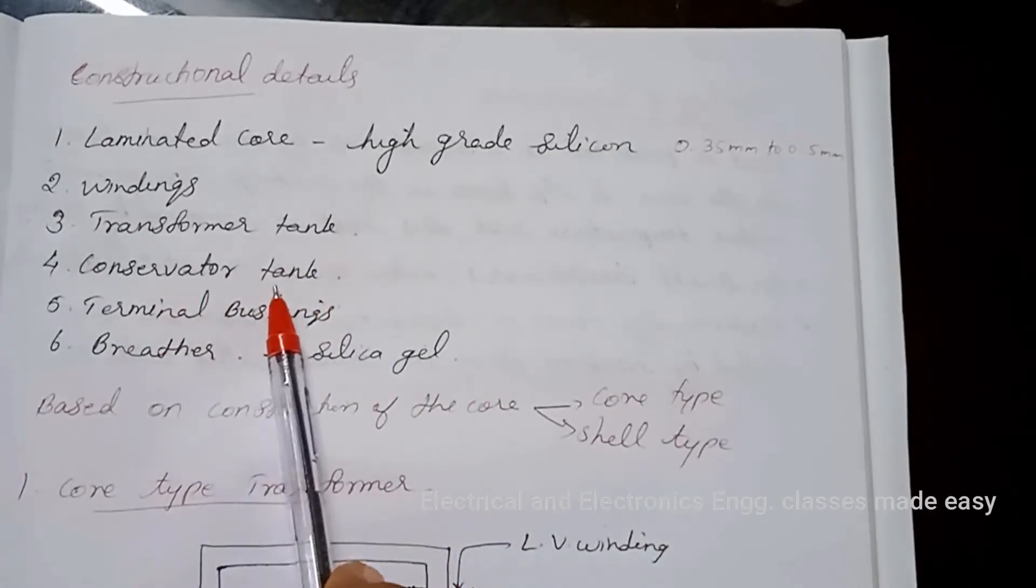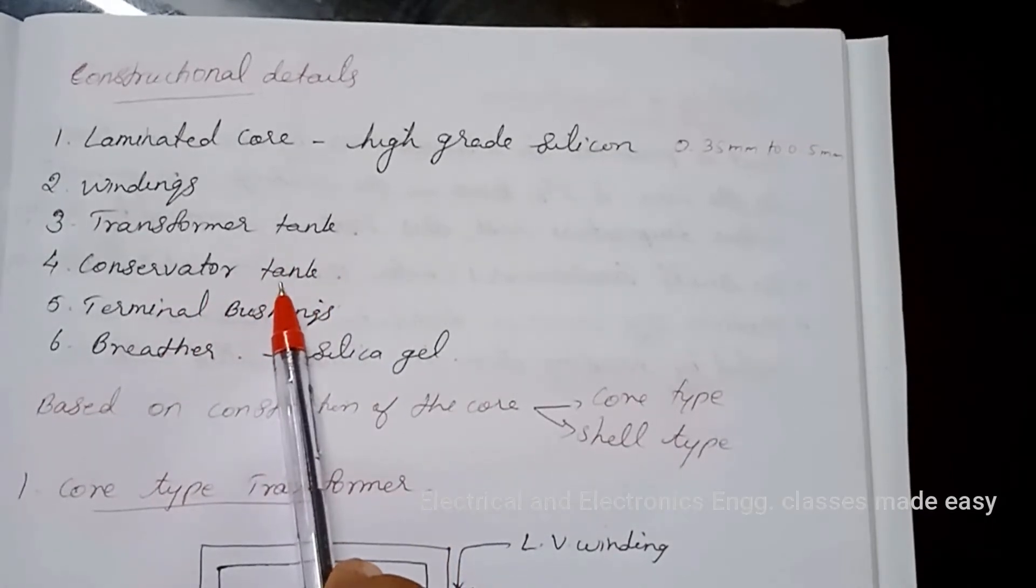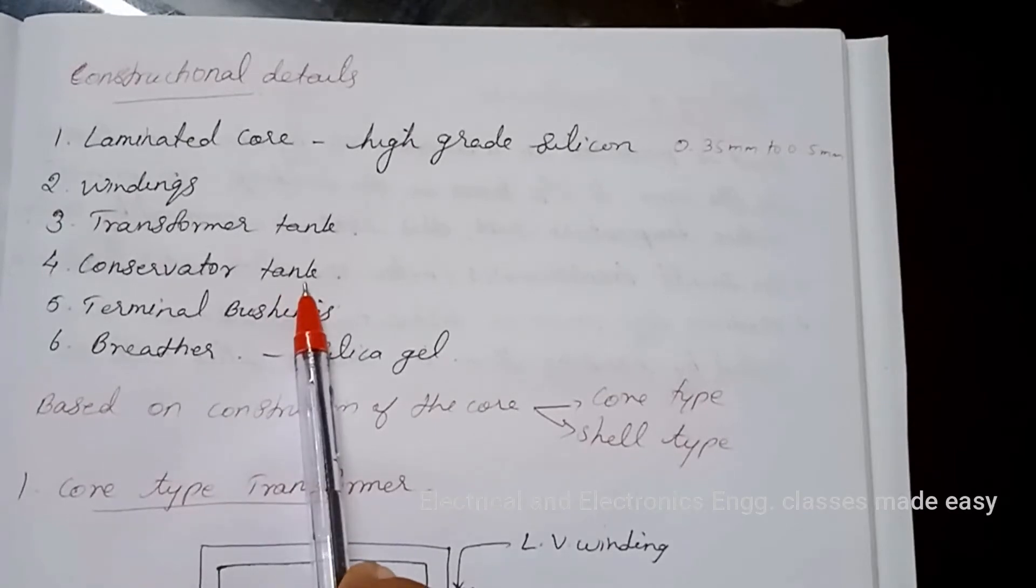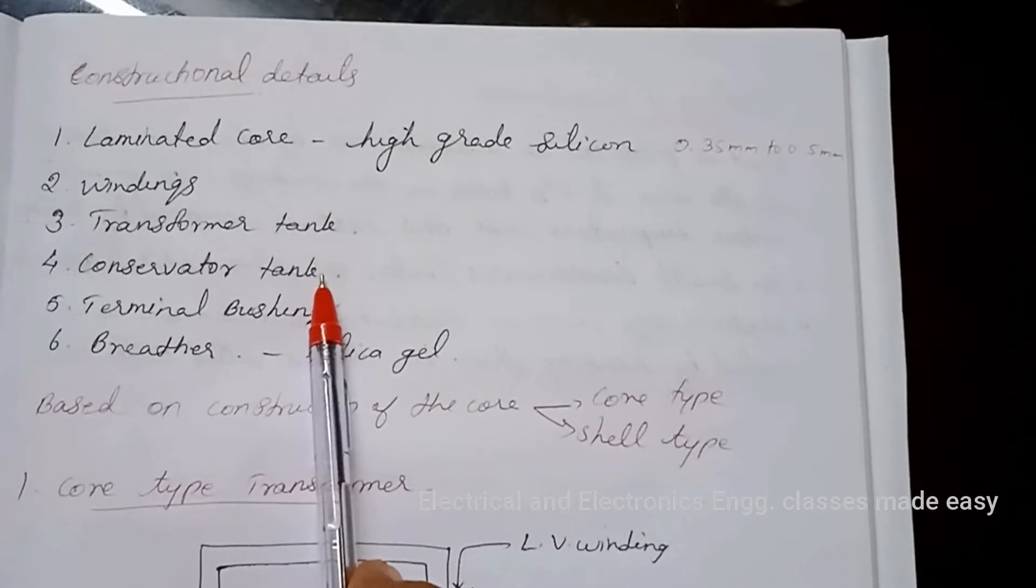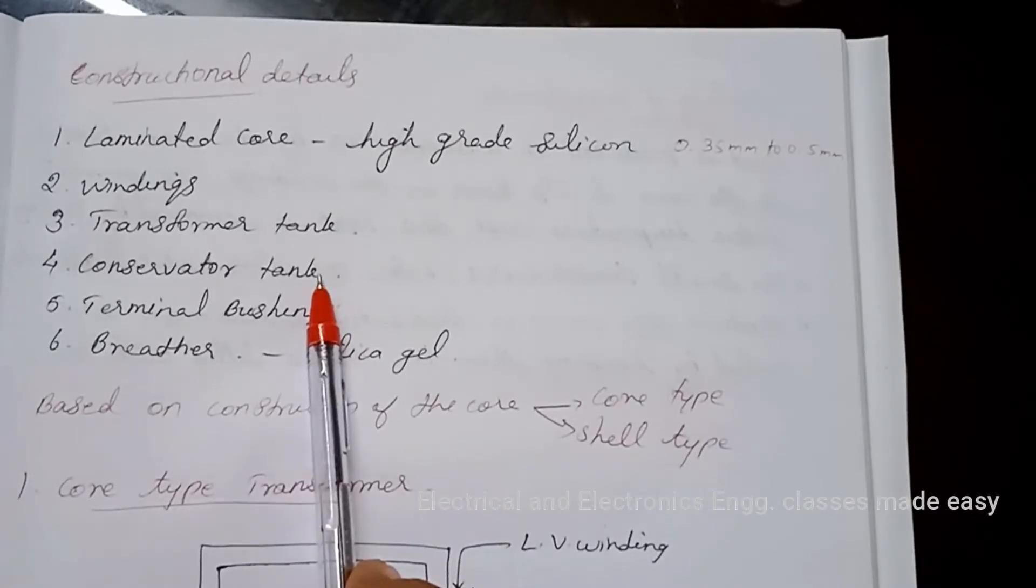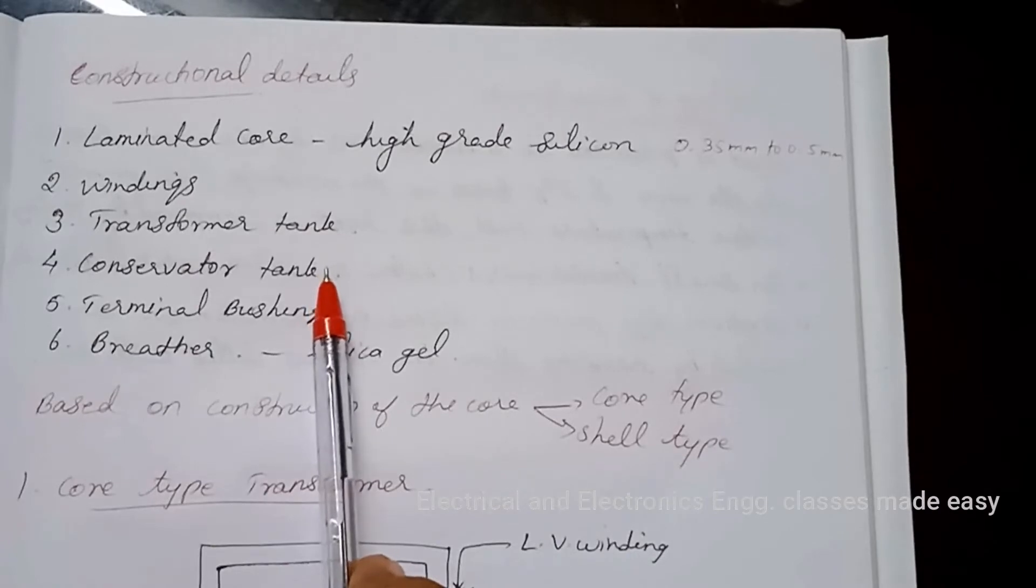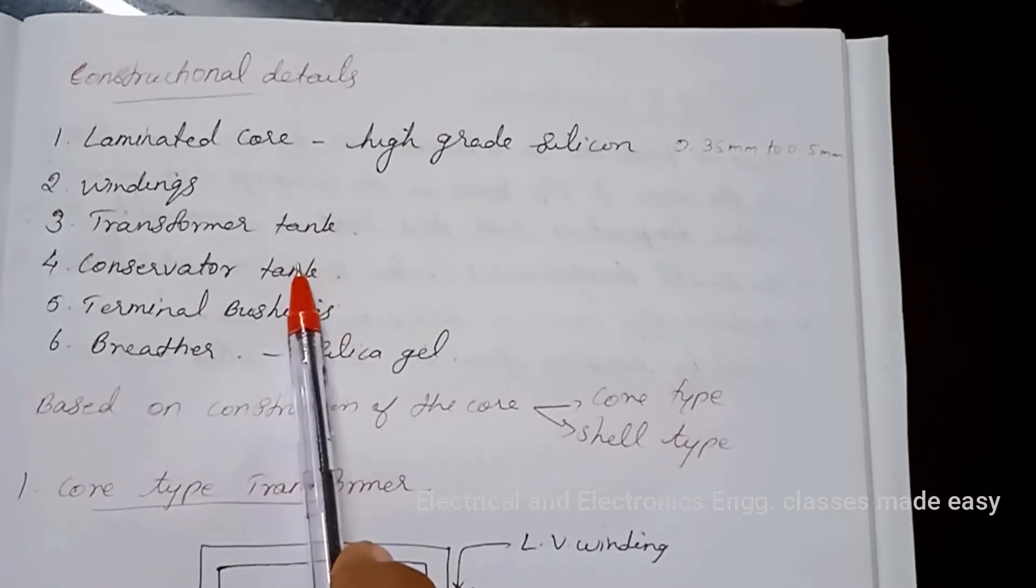Conservator tank. It is a small tank mounted on the main tank, connected by a pipe which takes into account the rise and fall of oil level due to heating and cooling of the coil. The main tank completely filled with oil, but conservator tank is partially filled with oil.